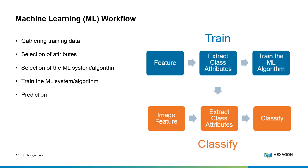So the workflow is: first, gathering all of your training data. Then you need to select the attributes that you're going to use in the training. Next, you need to figure out which machine learning algorithm is best to use for the type of data that you have as well as the application. Then you need to train the system. Finally, after the system is trained, you can use that training to predict in datasets that the machine hasn't seen before.